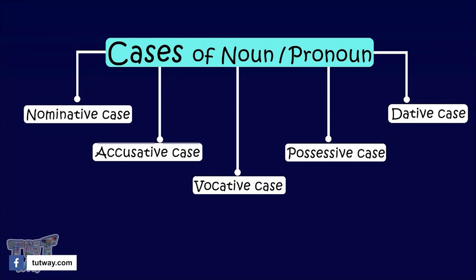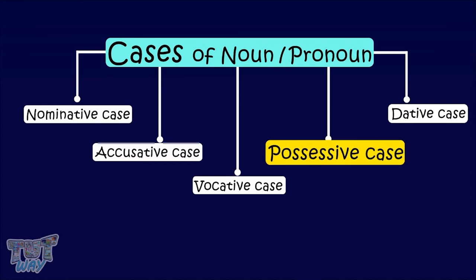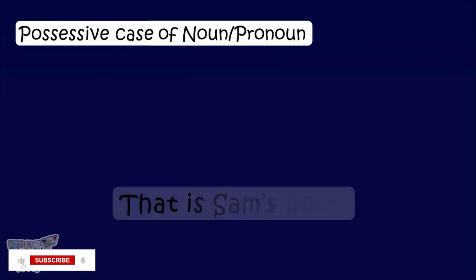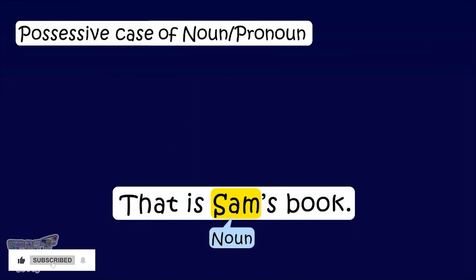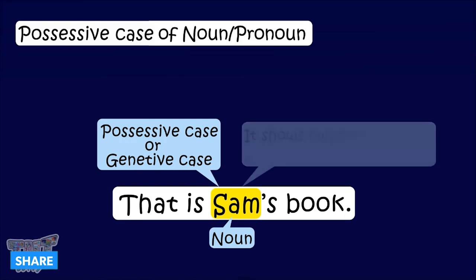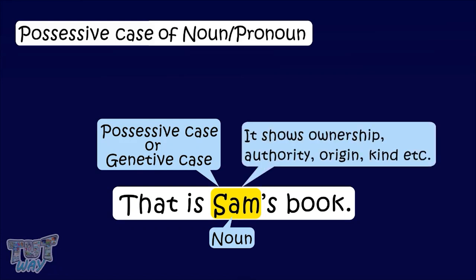We are going to begin with the possessive case, or genitive case, of noun and pronoun. A noun or pronoun is said to be in the possessive case or genitive case when it shows ownership, authority, origin, kind, etc.